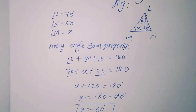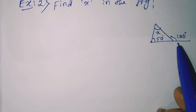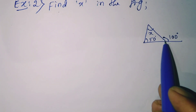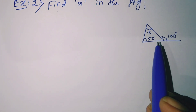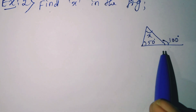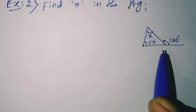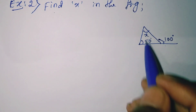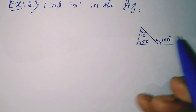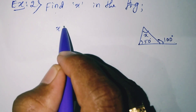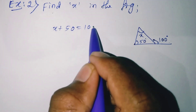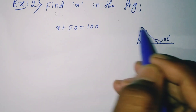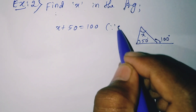Example 2: Find x in the figure. Observe that x and 50 are interior angles and there is an exterior angle of 100 degrees. This is based on the exterior angle property: the exterior angle equals the sum of the two opposite interior angles. So x plus 50 equals 100. The reason is the exterior angle property of a triangle.